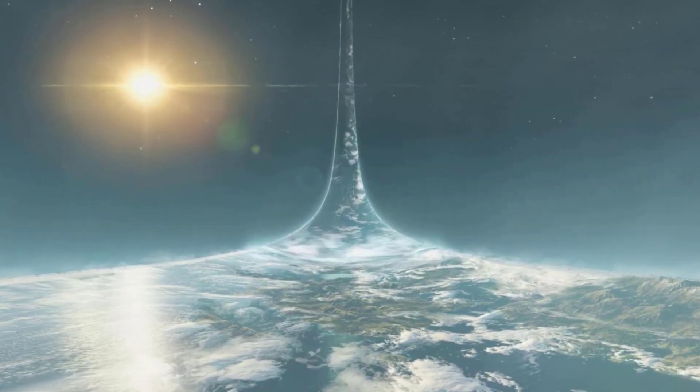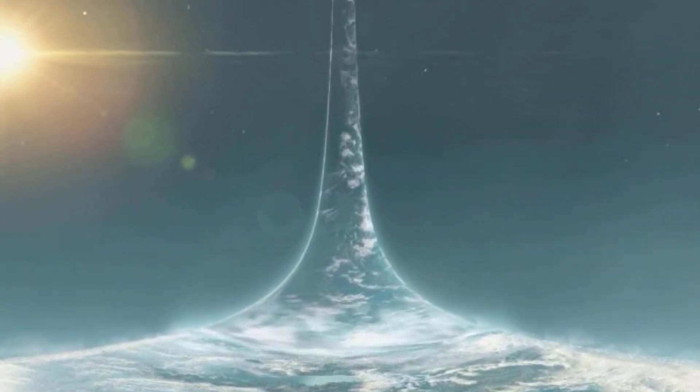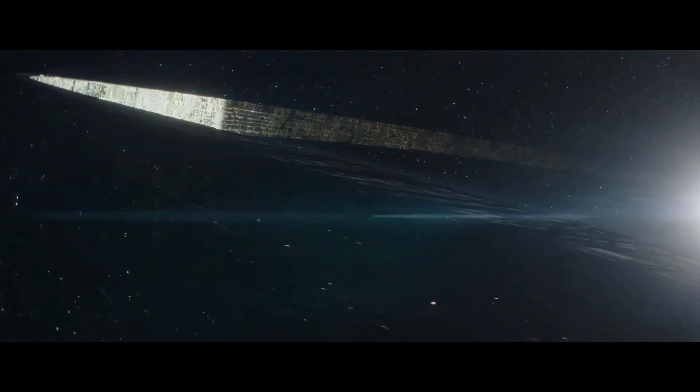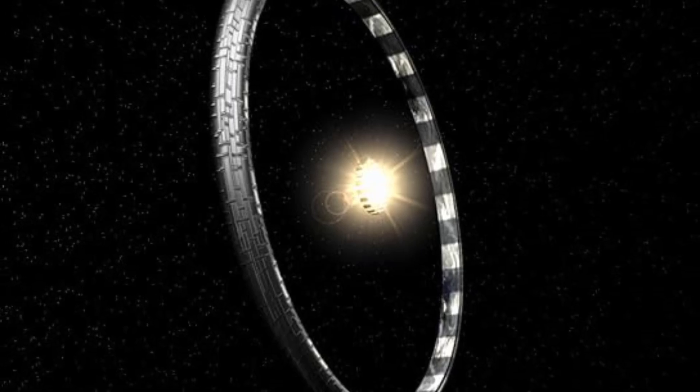The structure would either orbit around a star or if it is big enough, it would encircle the entire star. Using centrifugal force, its rotation would be used to generate artificial gravity, while massive panels or shadow squares can be used to regulate light to create a day and night cycle.